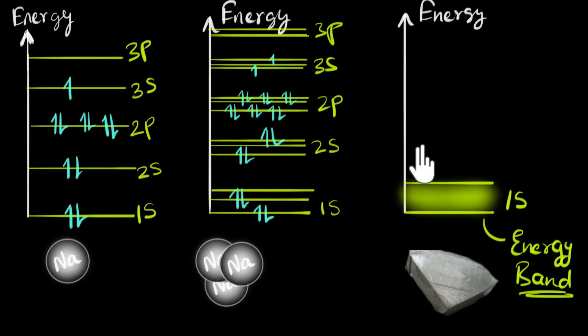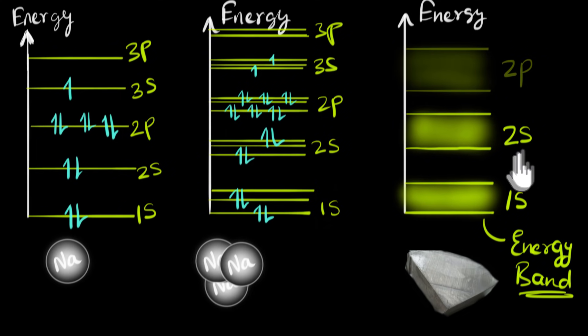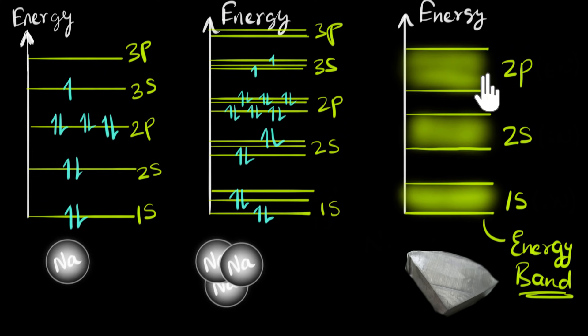Similarly, we'll have a 2s band, drawn the same way - the lower one, the higher one, and 10^23 lines in between. This we call the 2s band. And there are other bands as well, like 3s and 3p bands.